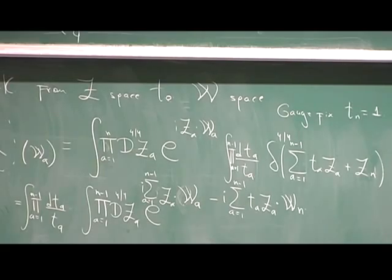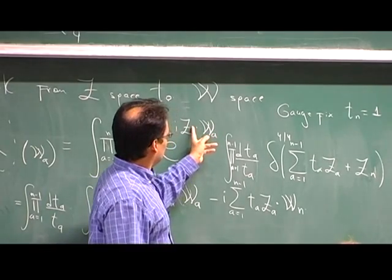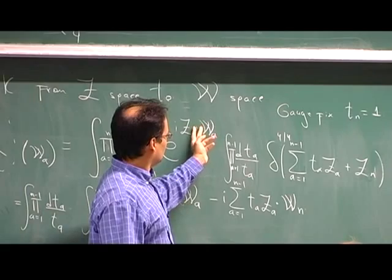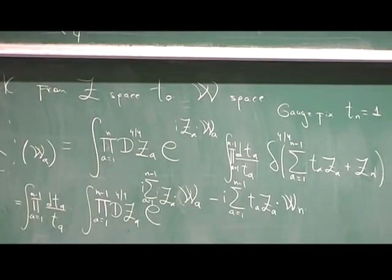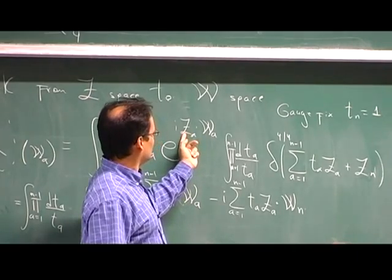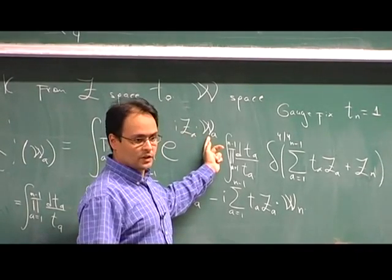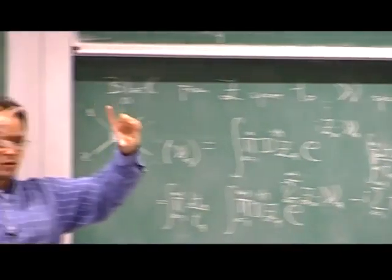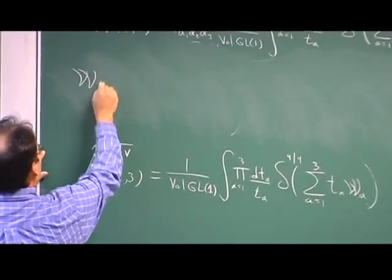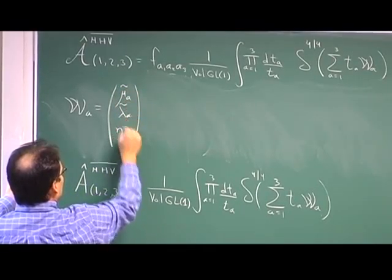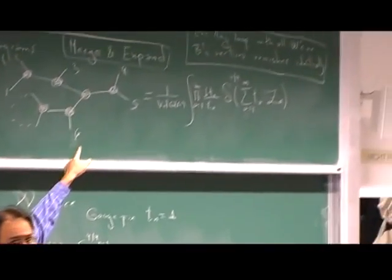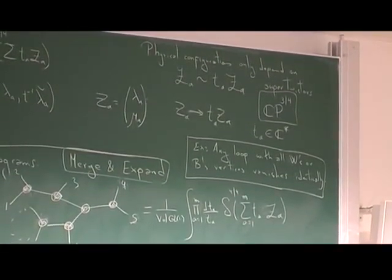What does it mean to dot Z·W? It means whatever product I have to do with the correct sign to go from one space to the other. The lambda has to be dotted with the mu of this guy — I was careful to put them in different orderings. The W_A was (mu_A, lambda-tilde_A), and the Z_A had lambda first. So when we dot them, they make sense: one is the conjugate of the other. And I've been implicitly defining that the etas and eta-tildes are conjugate Grassmann variables to each other.